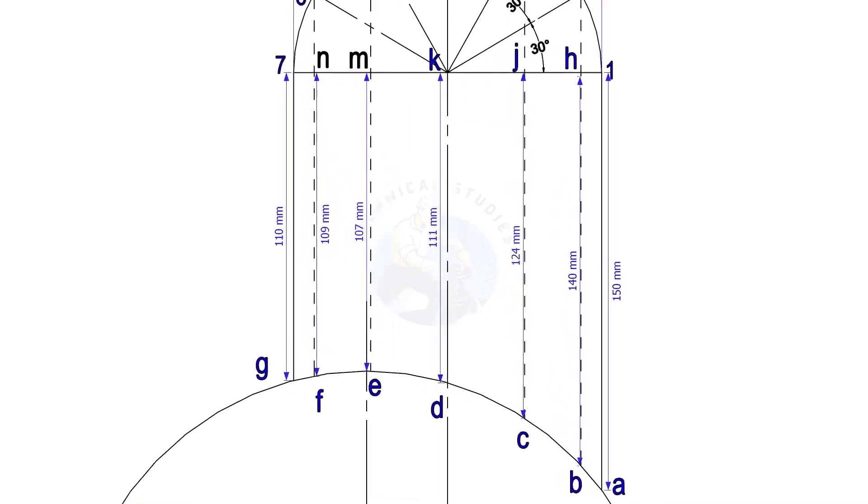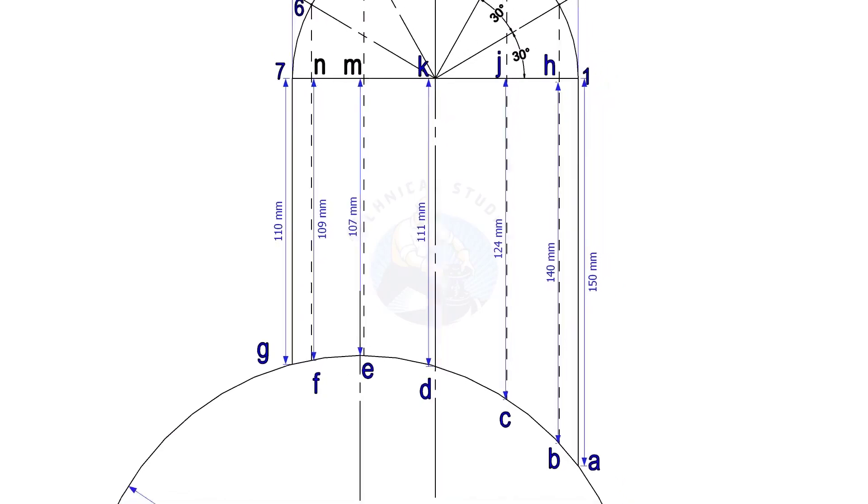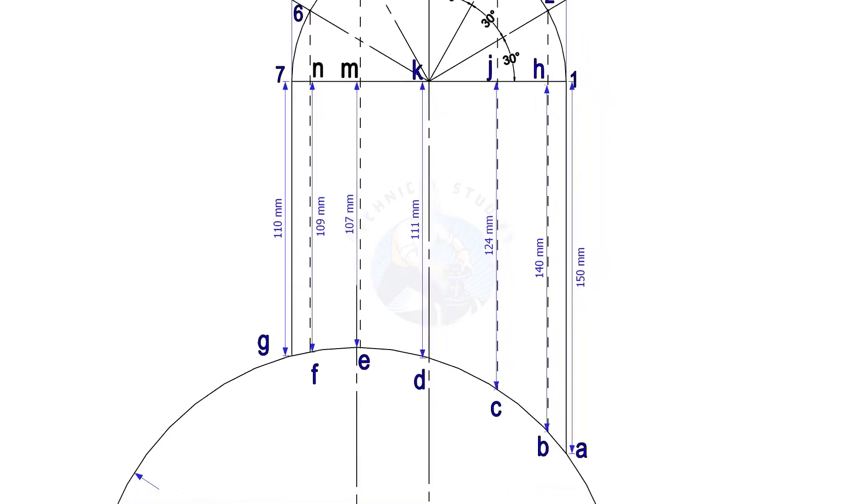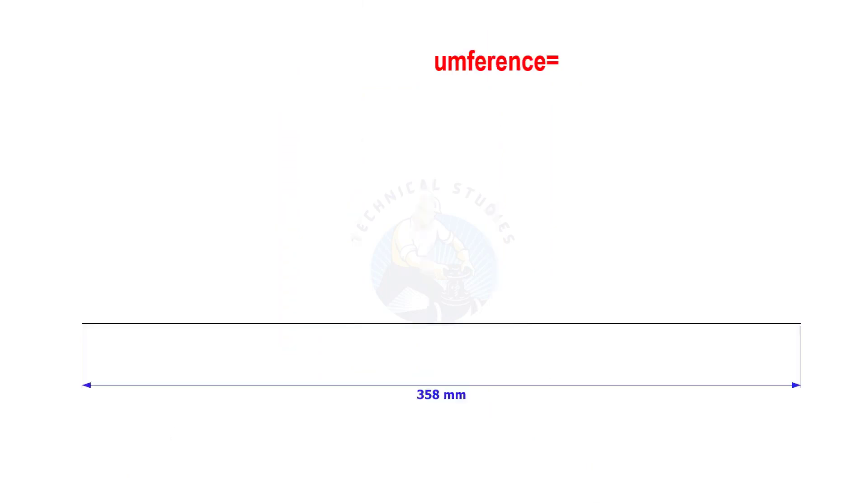Note down the distances G7, Fn, etc. Draw a straight line. The length shall be of the circumference of the branch.